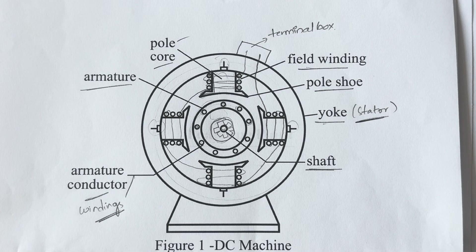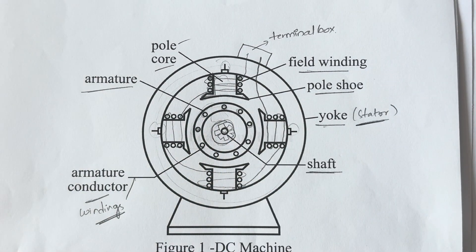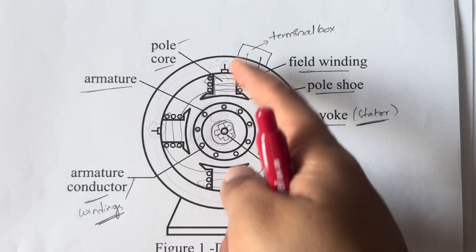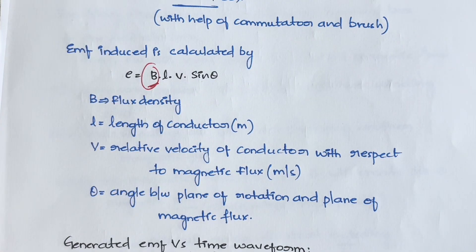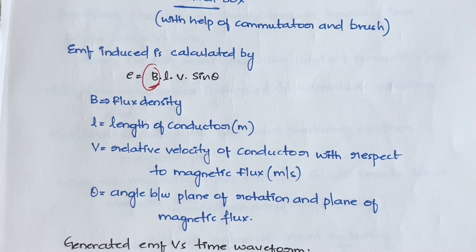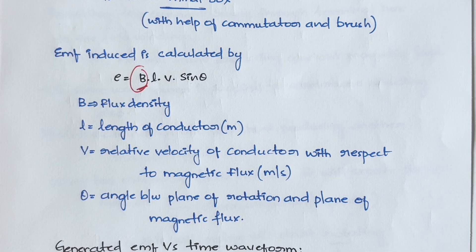To generate EMF you create motion — like pedaling a cycle, or wind turbines on windmills, or fans. Because of that motion EMF is induced, current is generated, and that current is sent out via brushes to the terminal box, which then powers whatever external load you need. The EMF induced is calculated using the BLV sin θ formula. That's all for this video — let me know if you have any questions.